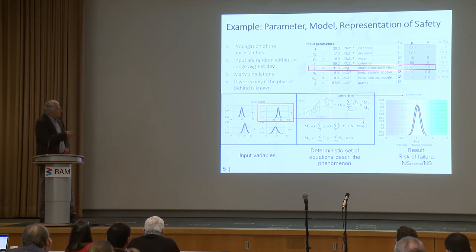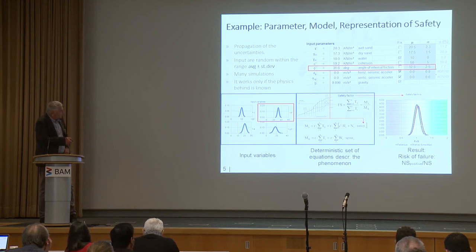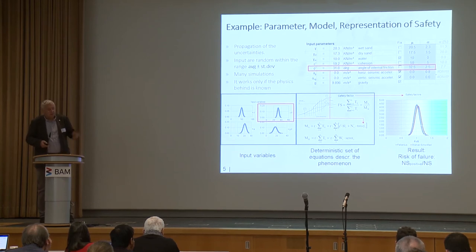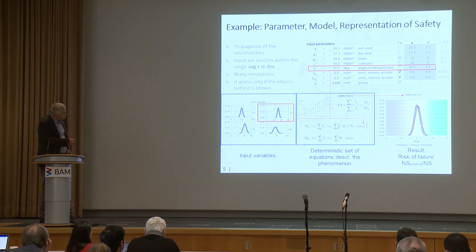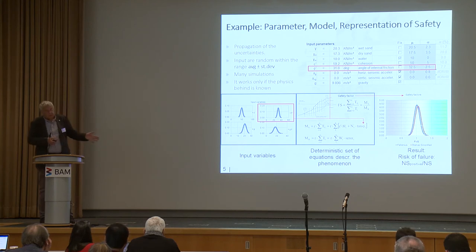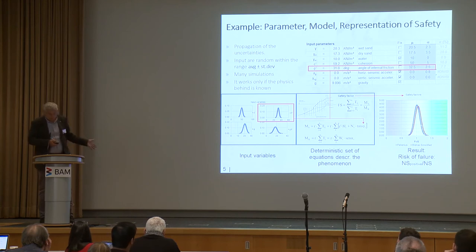We started by simulating with one standard deviation, and finally using two models came to a very simple representation: a factor of safety. This is understood — even though it is not exactly what it is, it is what you can sell. Also, the coloring is nice and important: if you tell someone the factor of safety is one, okay. But if you can show them they are more toward the green than the red, the economists are happy.